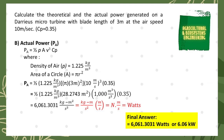Again, we simplify the units into watts by extracting meters per second. This gives us kg·m/s² times m/s, which equals Newtons times meters per second, which also equals watts. So our final answer for the actual power is 6,061.3031 watts, or 6.06 kilowatts when divided by 1,000. That is the answer for the actual power of the micro turbine.